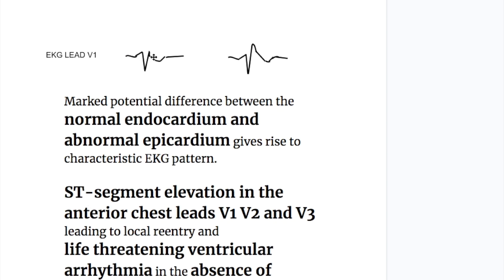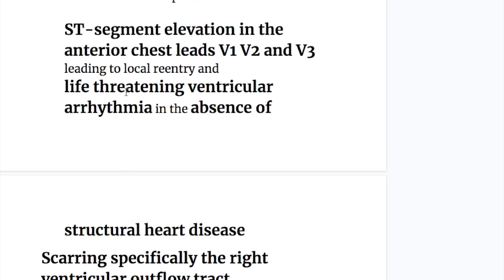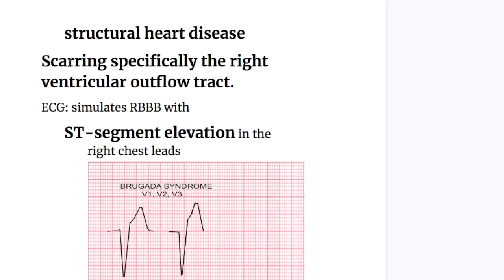The EKG pattern in Brugada syndrome shows ST segment elevation in the anterior chest leads. This is the normal anterior chest lead V1, and in Brugada syndrome there is an elevated ST segment in leads V1, V2, and V3, leading to local re-entry and life-threatening ventricular arrhythmia in the absence of structural heart disease.